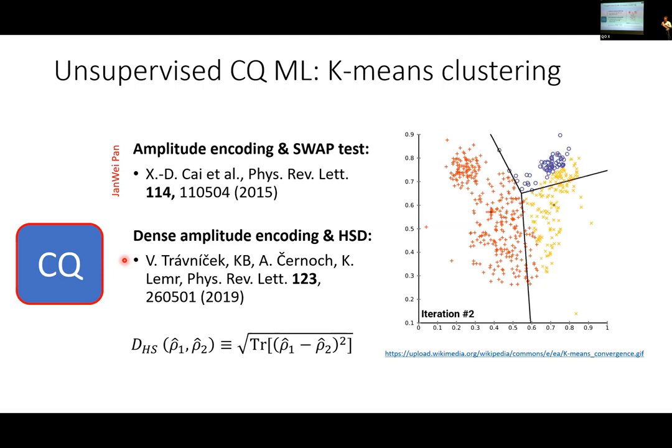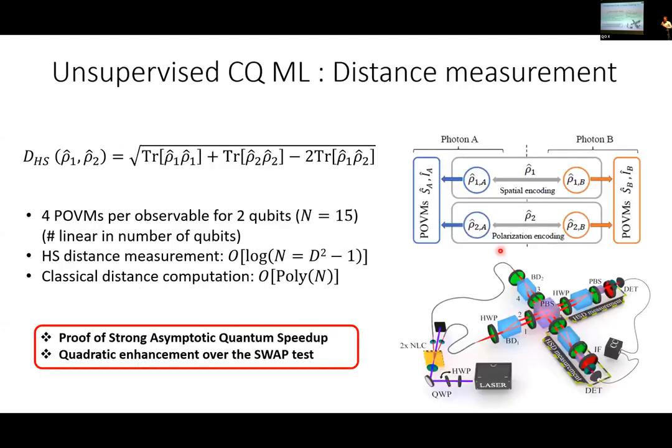You can improve on usual swap tests that we all know in this community. Instead, measure distances in Hilbert space - Hilbert-Schmidt distance - that we experimentally measured in this kind of setup using hybrid entanglement. You can get some asymptotic speedups. We were not able to show that we can do this better than a classical computer.